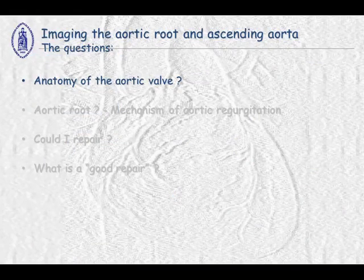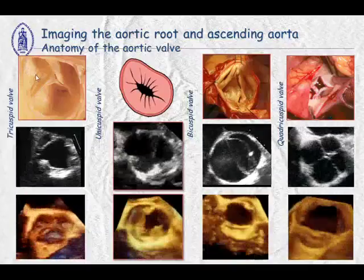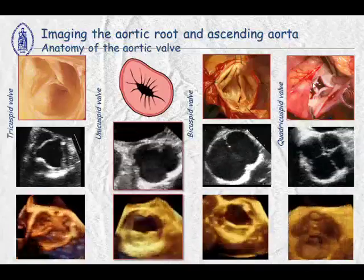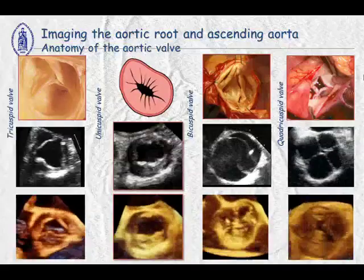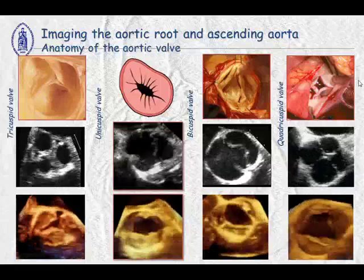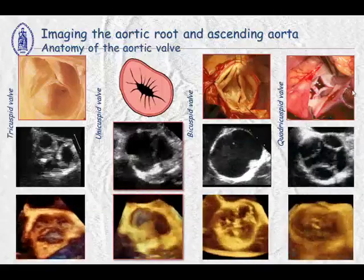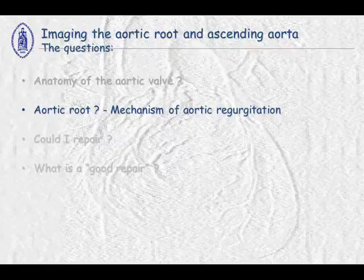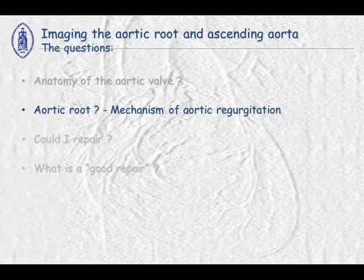The first question is: what is the anatomy of the aortic valve? As you know, normally the aortic valve is tricuspid, but you can also have unicuspid, bicuspid, or quadricuspid valve. The question is not only the number of leaflets, but also the quality of the tissue. Are they thin or thick? Is there some calcification — moderate or severely calcified aortic valve?